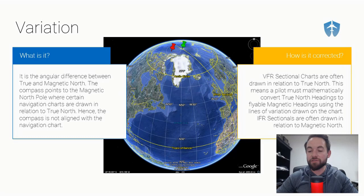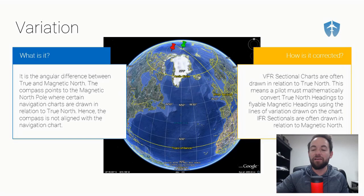You may have seen dashed lines on a VFR sectional labeled something like '13 degrees east' or '13 degrees west.' Just remember: west is best, east is least. So if you see 13 degrees east, you need to subtract 13 degrees from your true heading to get your magnetic heading — meaning you should be flying 13 degrees less than your true heading calculation. That's variation.